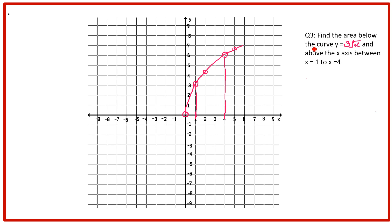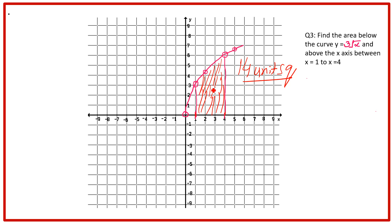अब देखें — 'below the curve and above the x-axis' का मतलब: curve के नीचे और x-axis के ऊपर जो area है, वही find करना था। इसकी range x = 1 to x = 4 है — यहाँ x = 1 और x = 4 पर निशान लगाए हैं। यही shaded area हमने 14 unit² calculate किया था — graph से concept clear हो जाता है।